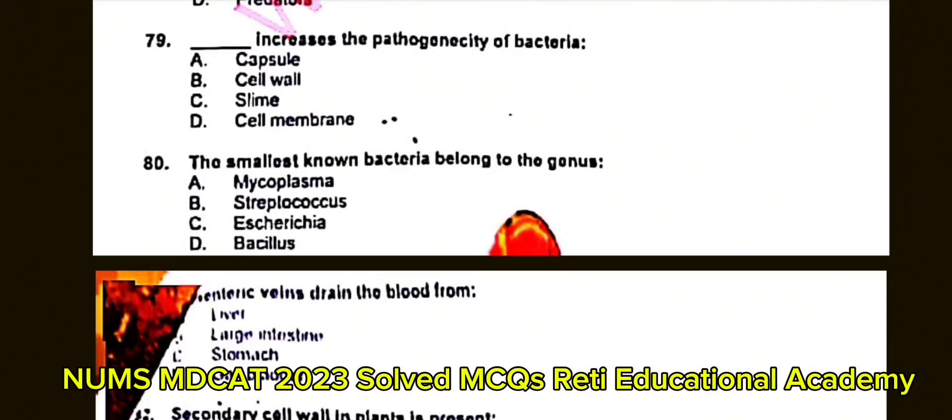Question number 80: The smallest known bacteria belong to the genus? A. Mycoplasma. B. Streptococcus. C. Escherichia. D. Bacillus. The correct answer is A: Mycoplasma.